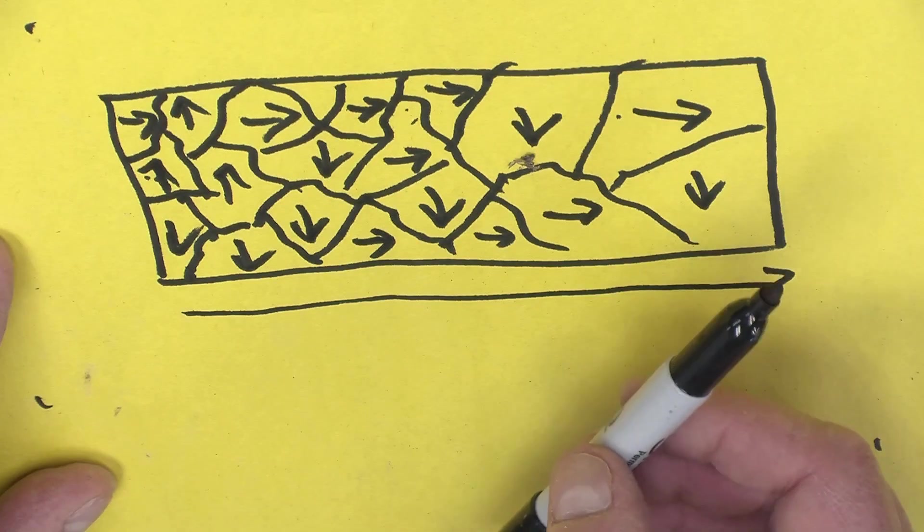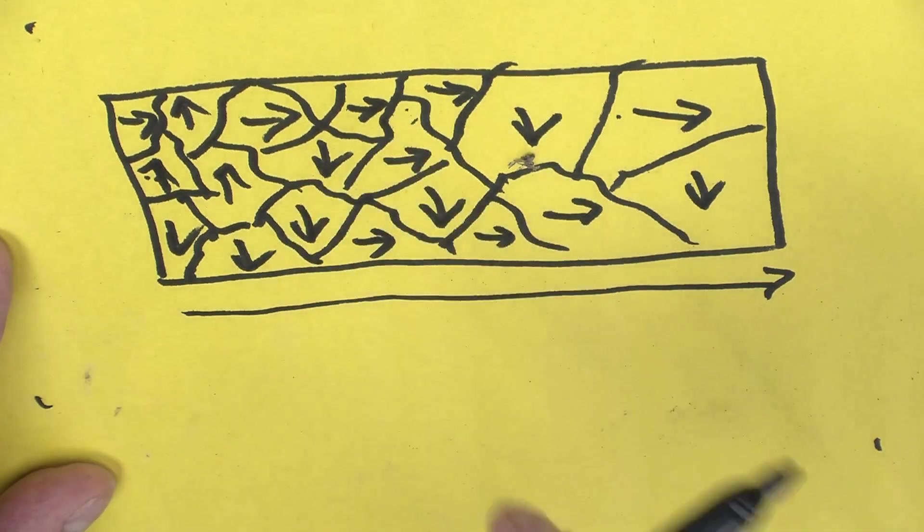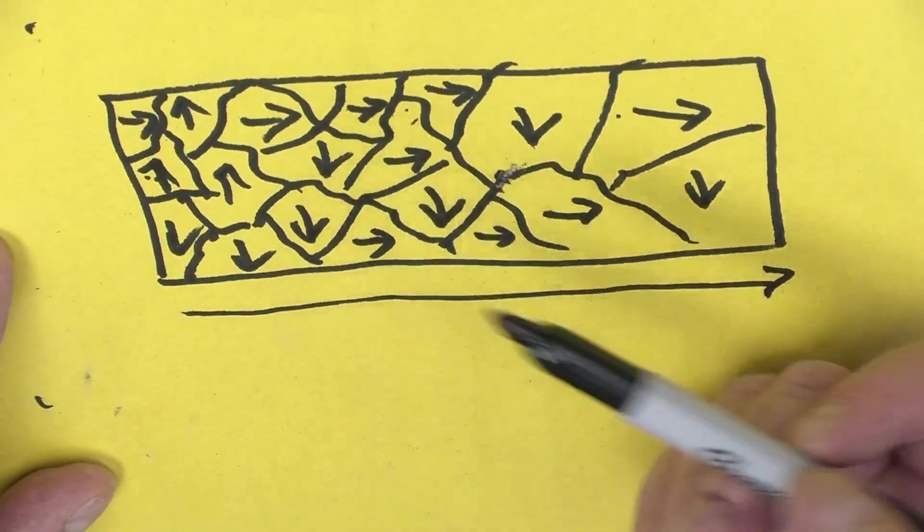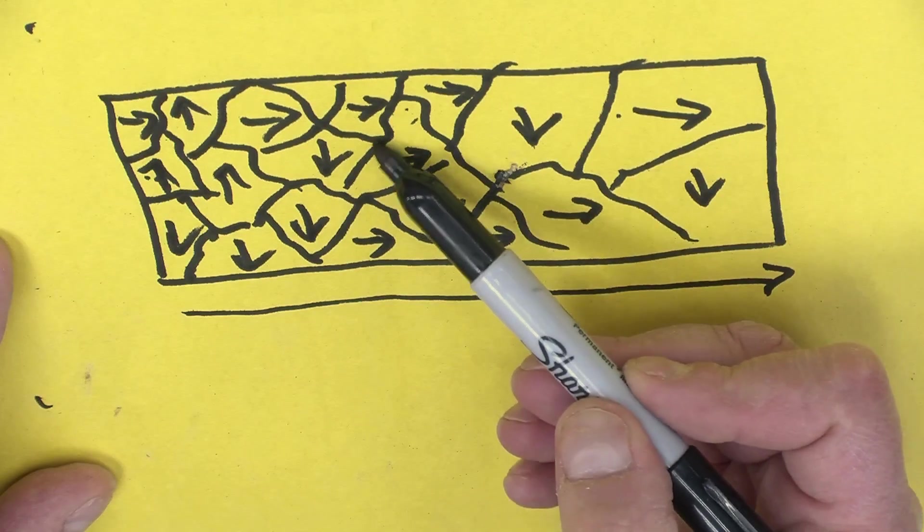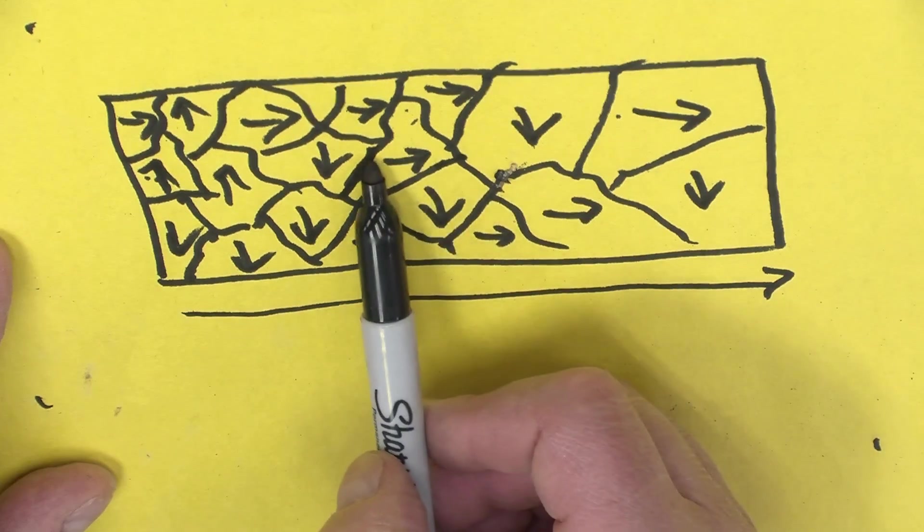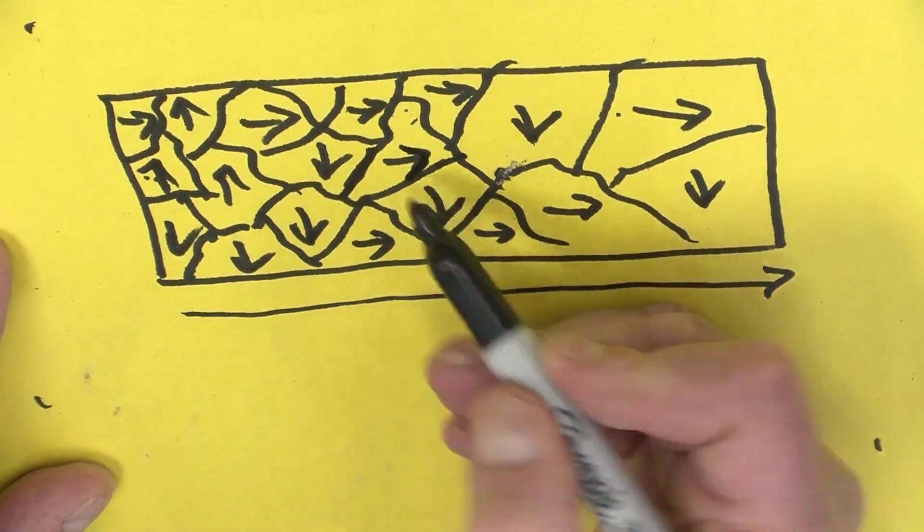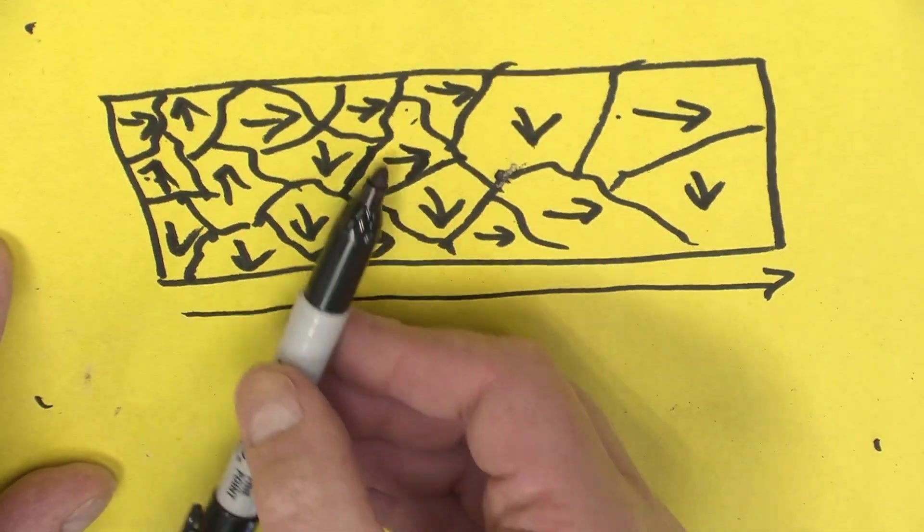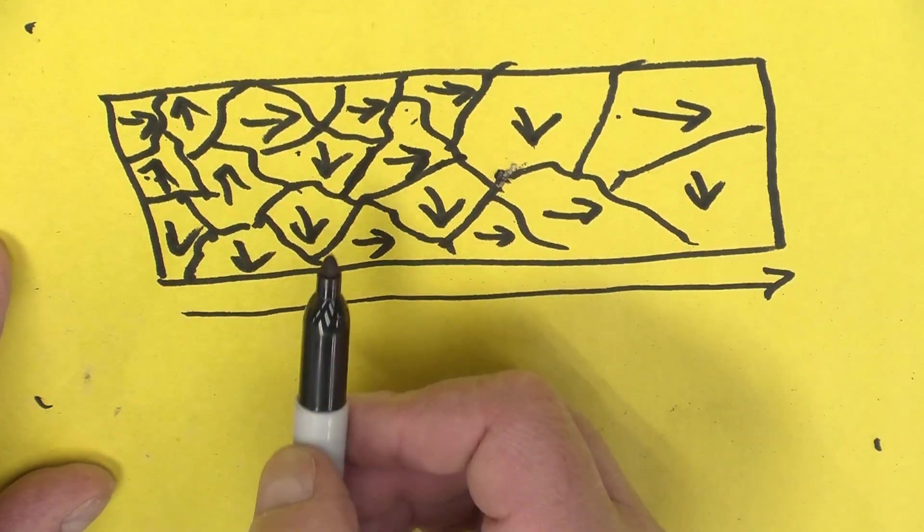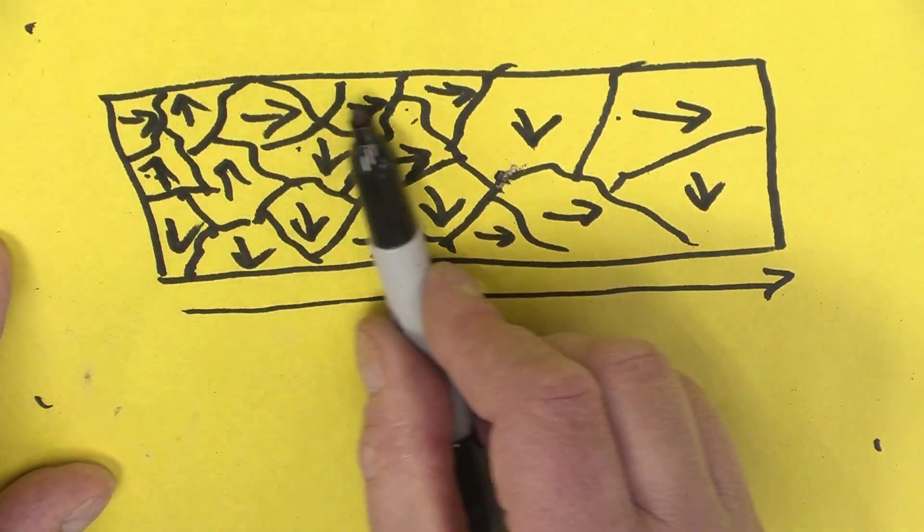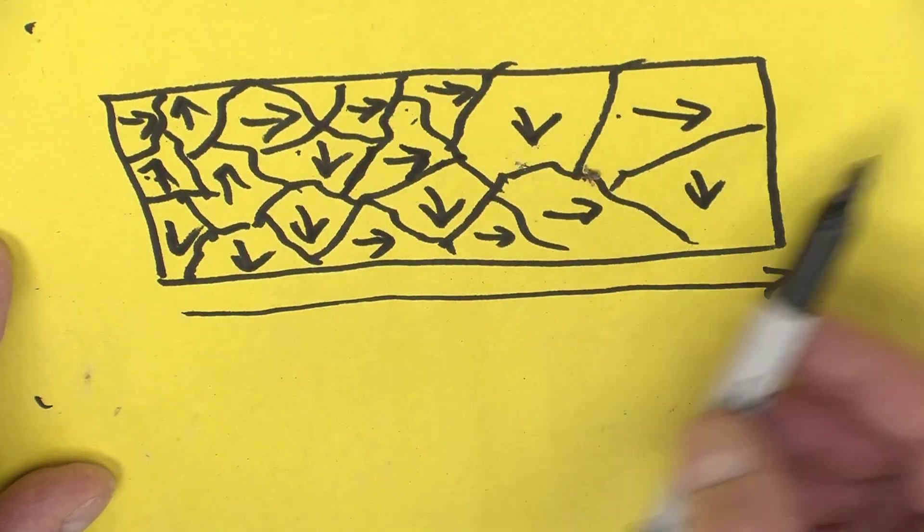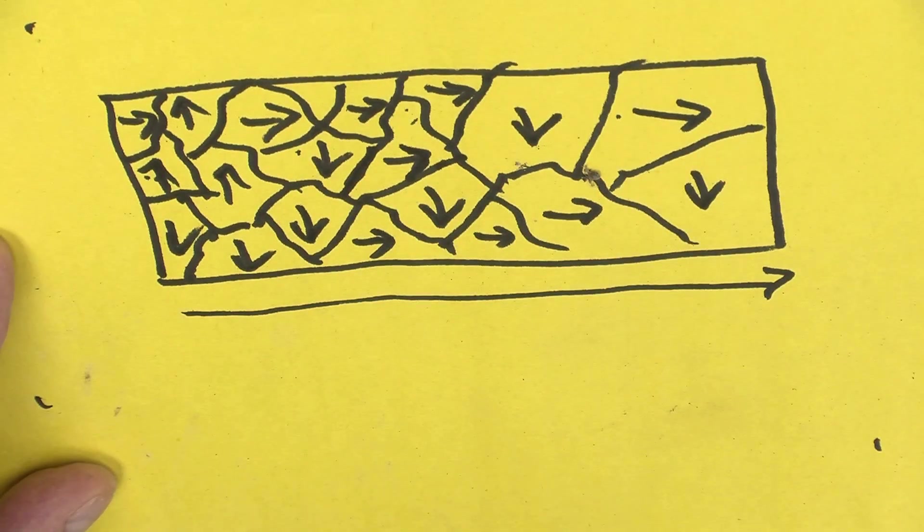And if a significant number point in one direction, you end up with a total magnetic field. Now, the way these domains move is it's not like this domain suddenly turns and points to another direction. What actually happens is the corners, or the boundaries, of these domains move. And the domains that are pointing in the direction we would like tend to get bigger.